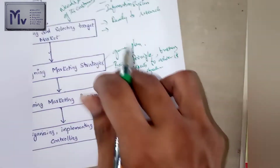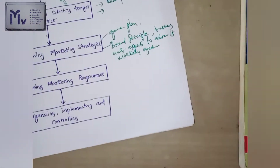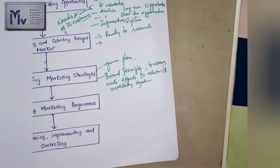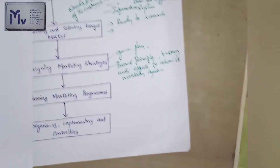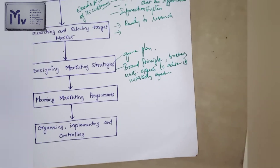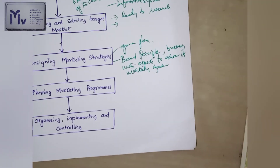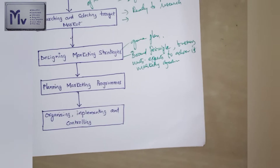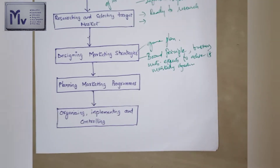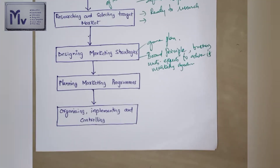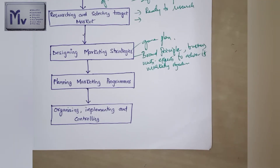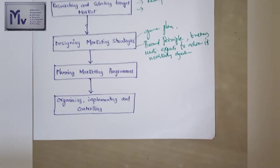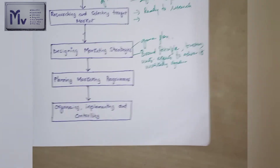Here, we have to design the marketing strategies. The four P's of marketing management — product, price, promotion, and place — are decided and directed at the customers.